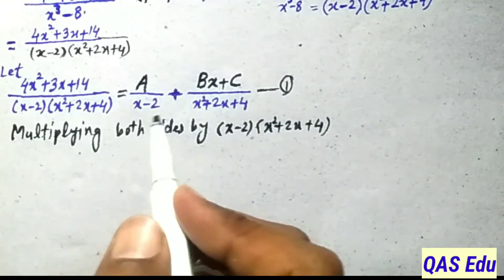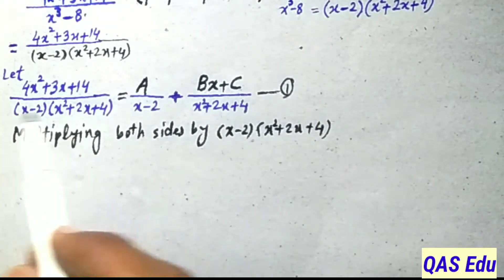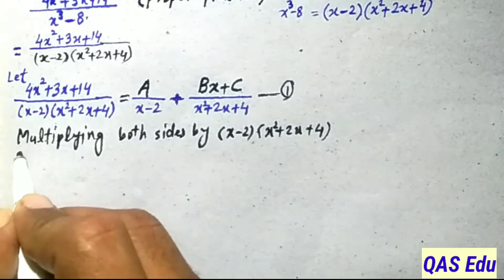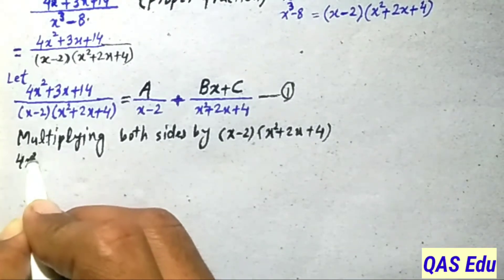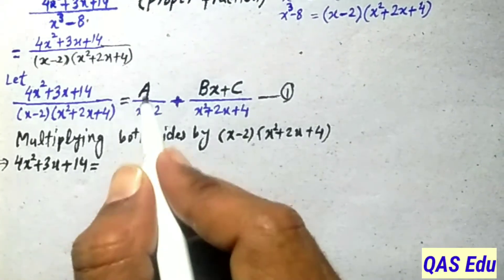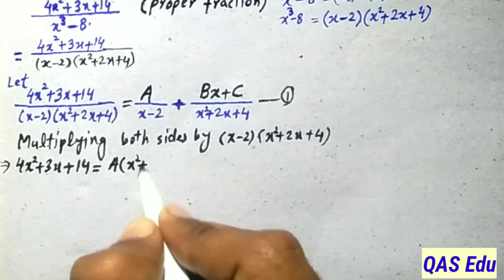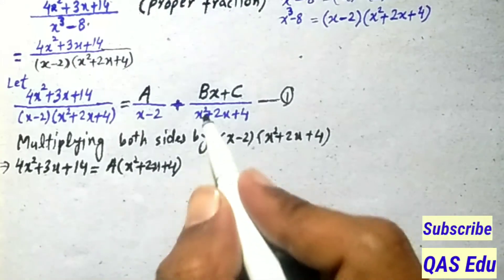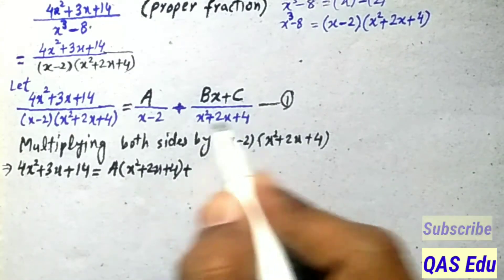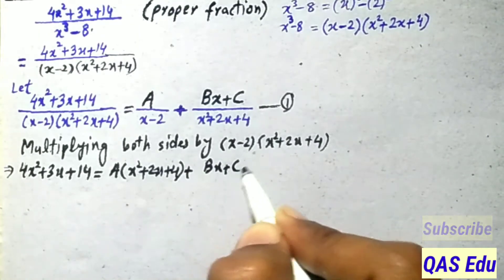Following the standard procedure, we multiply both sides by the denominator of the left hand side: (x - 2)(x² + 2x + 4). On the right side, A over (x - 2) multiplied by (x - 2) causes (x - 2) to cancel, leaving A multiplied by (x² + 2x + 4). Then (Bx + C) over (x² + 2x + 4) multiplied by (x² + 2x + 4) cancels, leaving (Bx + C)(x - 2). This gives us equation number 2.